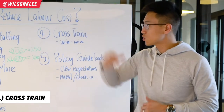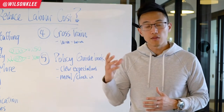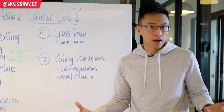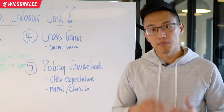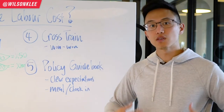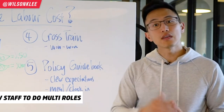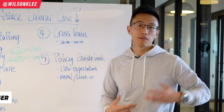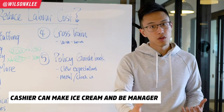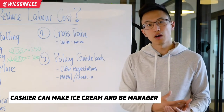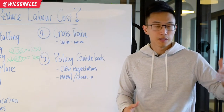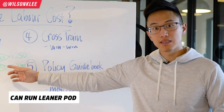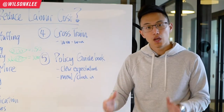The fourth way to reduce your labor costs is to cross-train. A lot of business owners don't like cross-training because it seems like added expense to train staff who aren't in a crucial role. But cross-training is super important because it allows staff to gain more skillset so they can one day fill multiple roles. For example, our cashier was hired as a cashier, but we also trained them to make ice cream and to play the manager's role — so they're trained throughout the whole process, able to fill in for others and run a leaner pod.